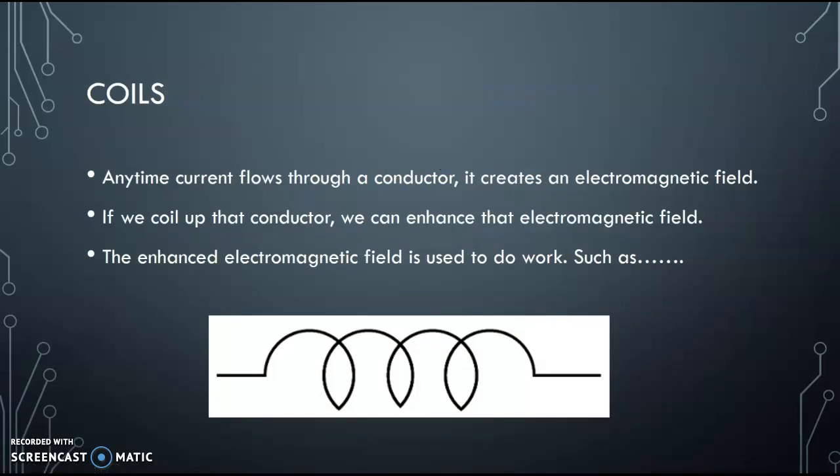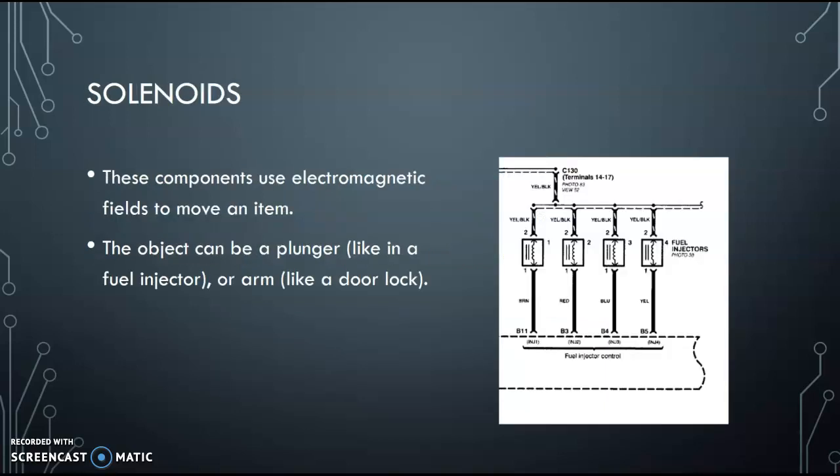Coils. Anytime current flows through a conductor, we know that it creates electromagnetic field. I mentioned that before. So again, we're sending current through a conductor that creates a magnetic field around that conductor. Basically useless. But if we coil up that conductor, so we take that wire, wrap it up in a coil, those magnetic fields build on each other. And then they end up creating a larger magnetic field that is usable. So this enhanced field we use to do work such as solenoids.